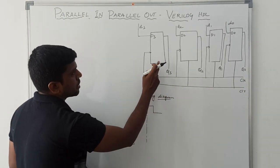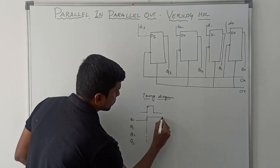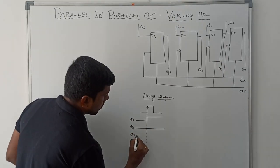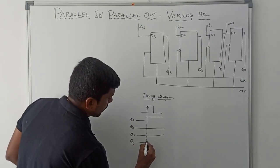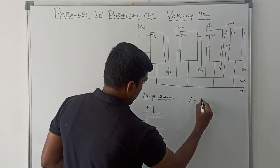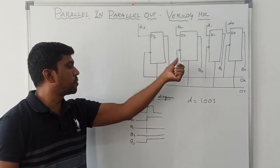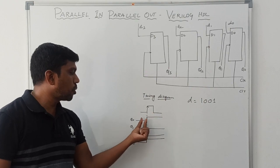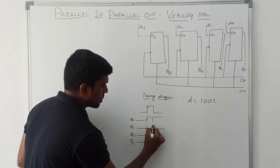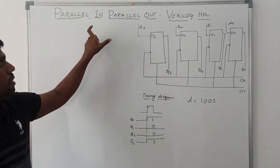Whenever the clock signal hits the flip-flop, it produces the output. For example, after the clock signal arrives: Q0 value is 1, Q1 value is 0, Q2 value is 0, Q3 value is 1. So our input D value is 1, 0, 0, 1. Whenever the clock signal hits the flip-flop, the corresponding output is released: Q0=1, Q1=0, Q2=0, Q3=1. This is the basic operation of parallel-in-parallel-out shift register.